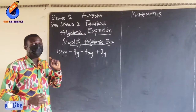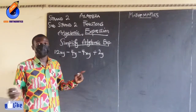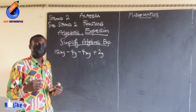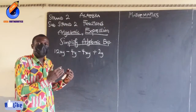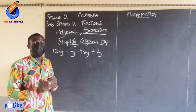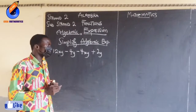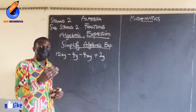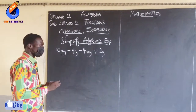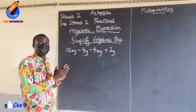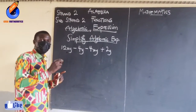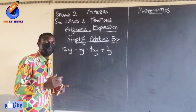You can only simplify these terms if you are able to identify the numbers having the same variables. I call this grouping of like terms. So we will group like terms — that is, look for the numbers having the same variables.